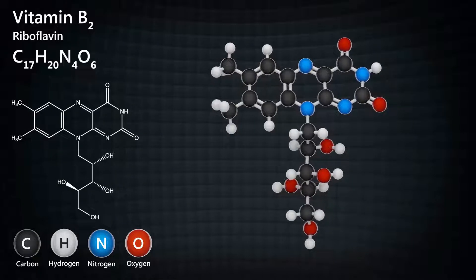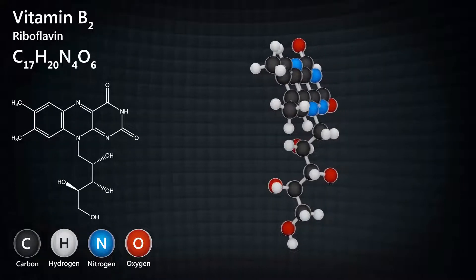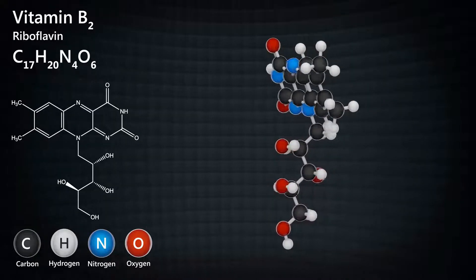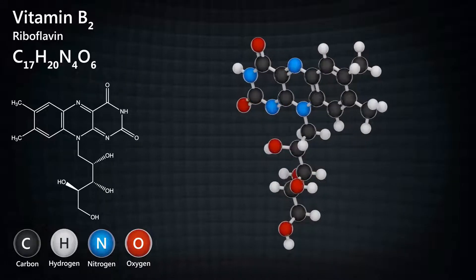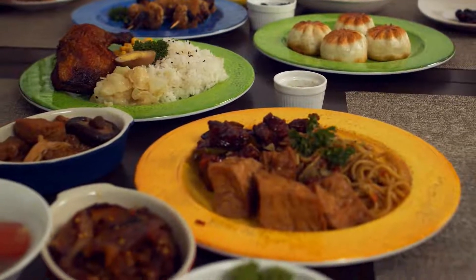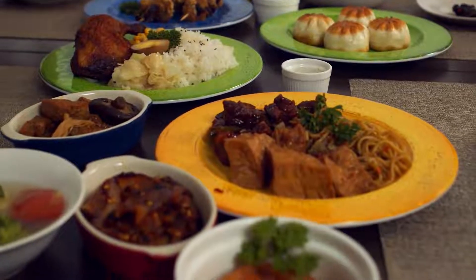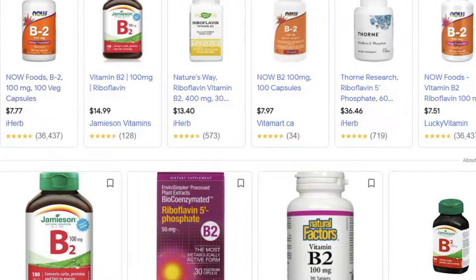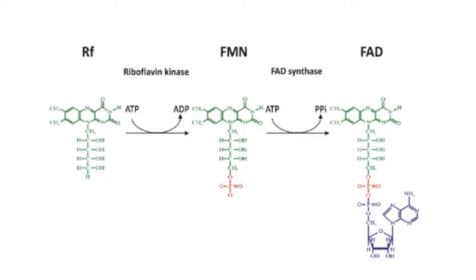Starting off with the structure — here you can see this is the structure of riboflavin. Like other Vitamin B's, riboflavin is found in a wide variety of foods, and there are also supplements you can take as well if you need. Once riboflavin is absorbed into our body, it can get metabolized into flavin mononucleotide, or FMN.